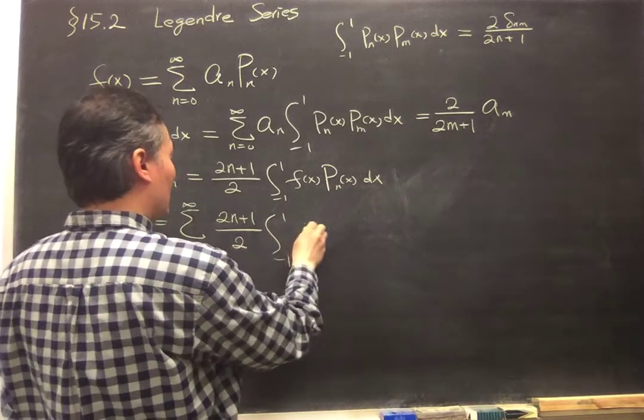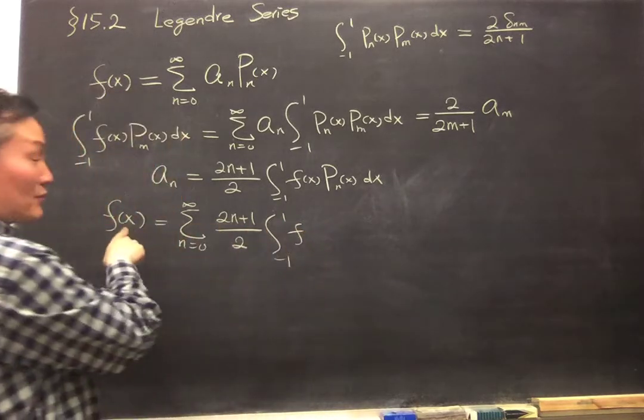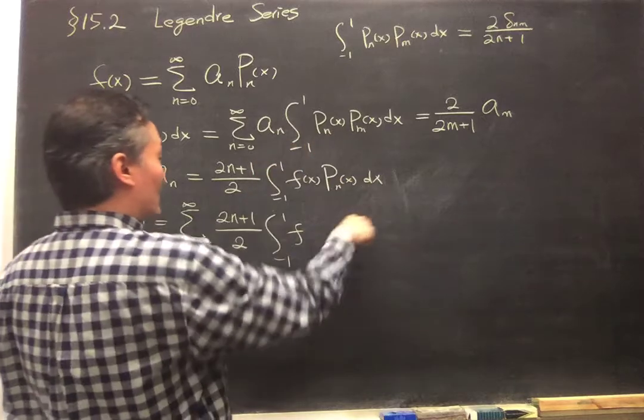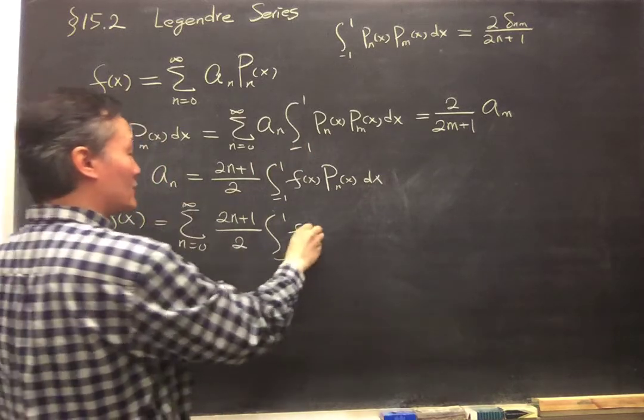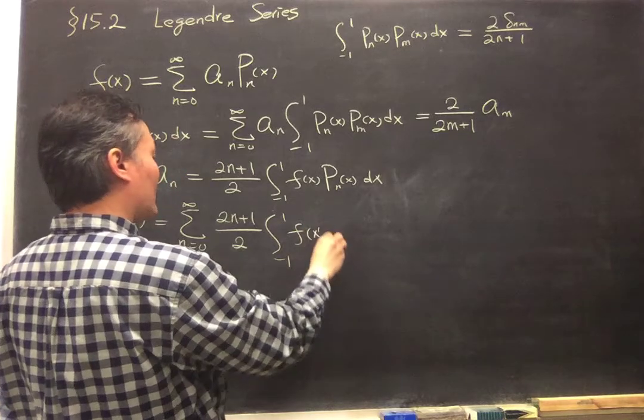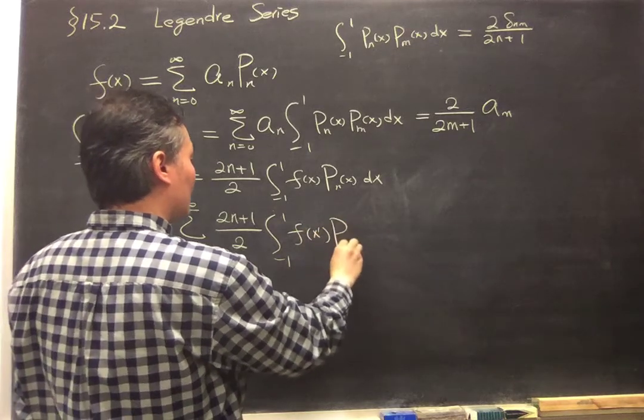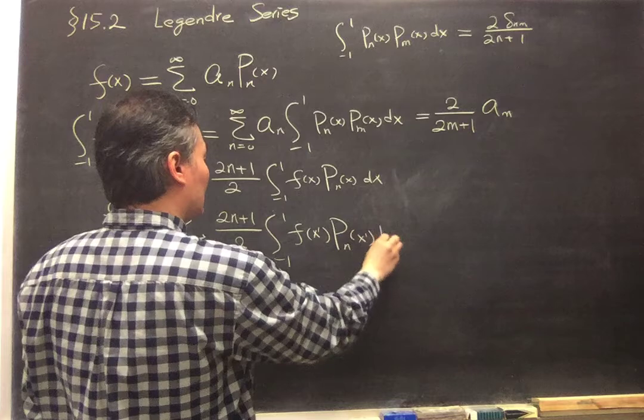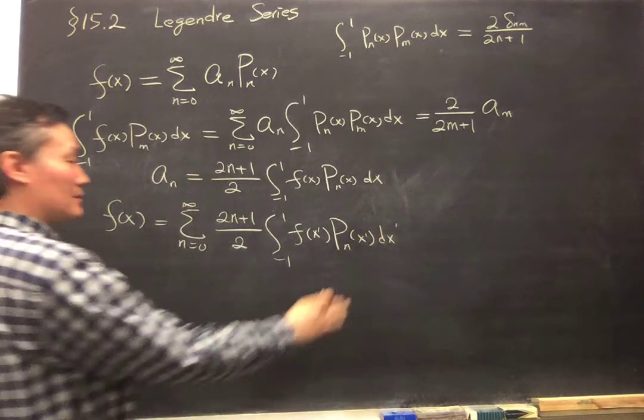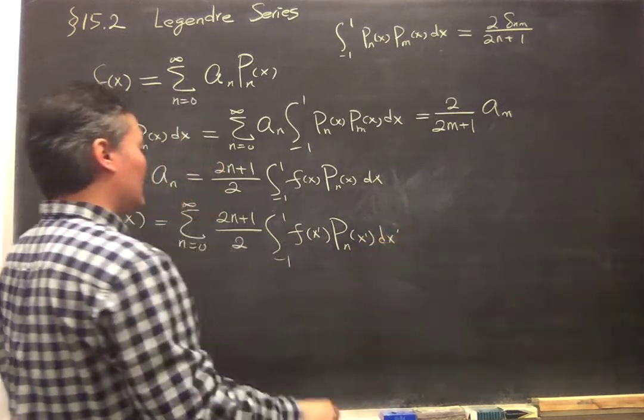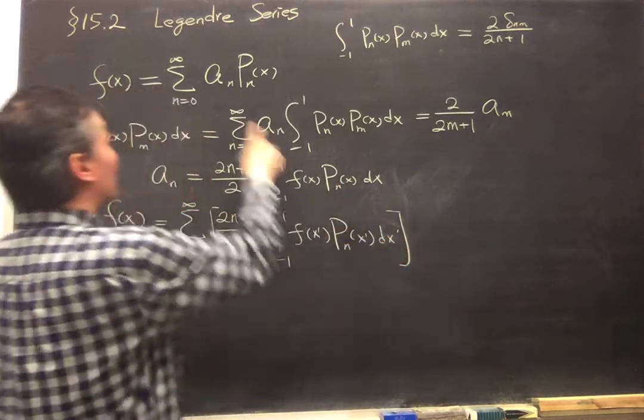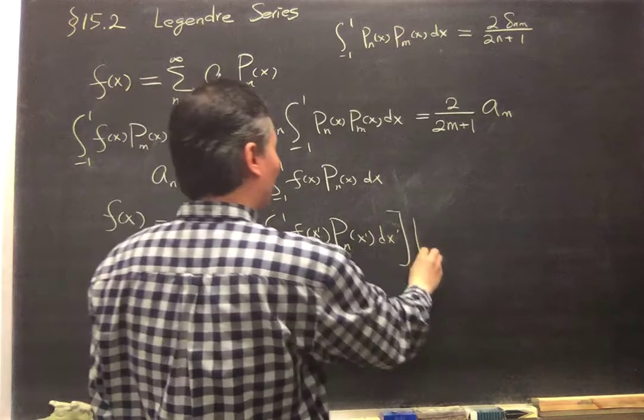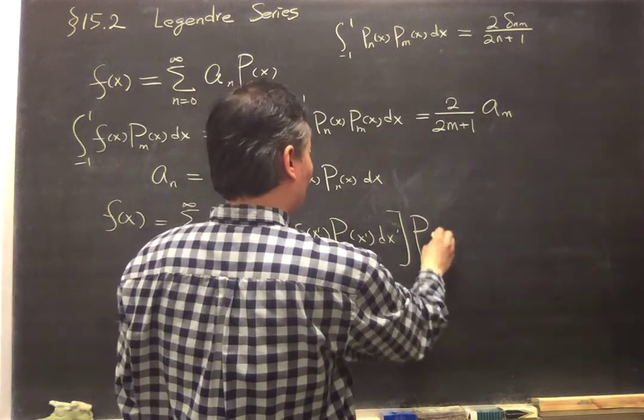from minus 1 to 1 f. Now, because we already use x here, this is an integration to get the coefficient a_n. So we can write like x prime and P_n(x prime), x prime. So this is the whole thing, this is a_n multiplied by P_n(x).